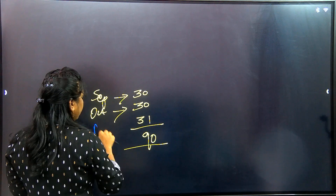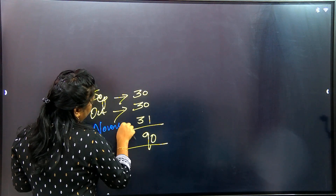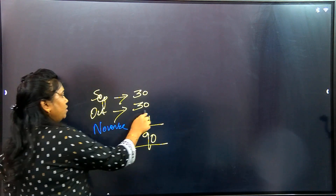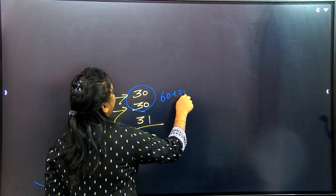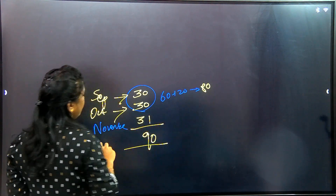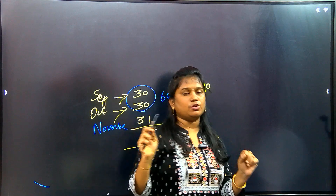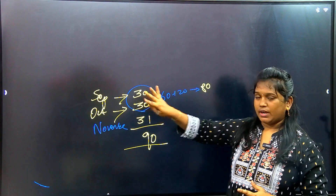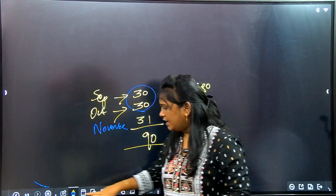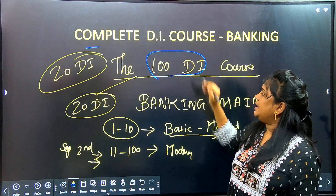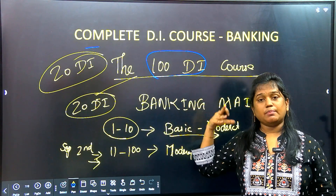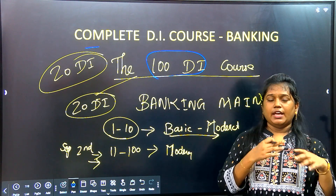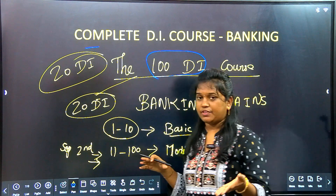In November, there are IBPS PO Mains — 1st week or 2nd week. That is why we will have 60 DAs covered and prepare the aspirants for this course. In September 1st, there are 20 DAs. We will add daily DAs. In the schedule, we will upload to the app at 7 PM. In the morning, we will upload the first video on the A2Z series to YouTube.